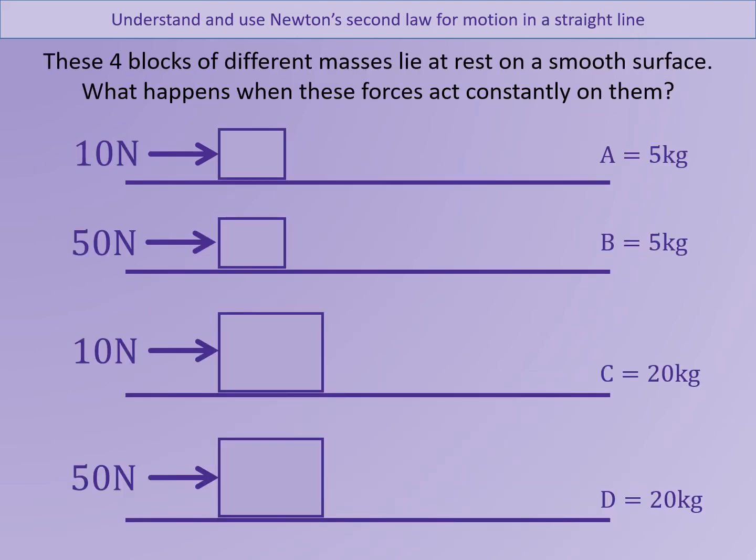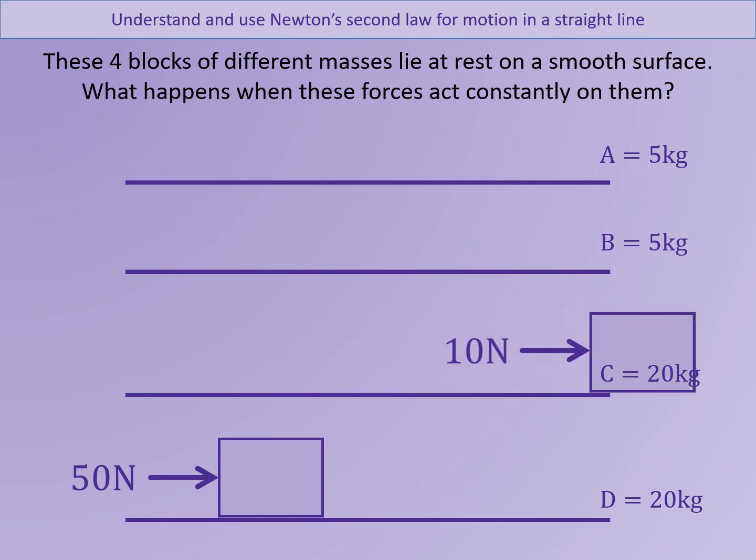We are now going to consider these four scenarios. Four different boxes with different masses are acted upon by four forces. Let's consider the five kilogram block acted upon by a ten-newton force. We see that it accelerates from rest. We are now going to increase the force acted upon by the five kilogram block. And we can see that if the force is increased to 50 newtons, the acceleration is much quicker. We are now going to consider a ten-newton force acting on an object with a larger mass, a 20 kilogram object. We see that while it still does accelerate, it does not accelerate as quickly, the acceleration is less. If we increase the force, we see that the 20 kilogram object accelerates at a much faster pace.